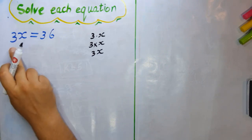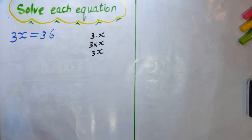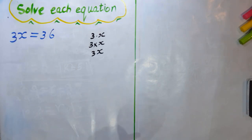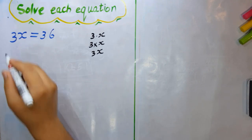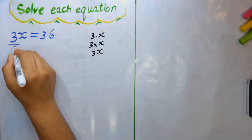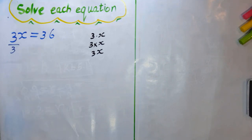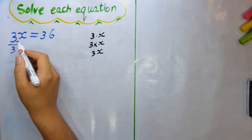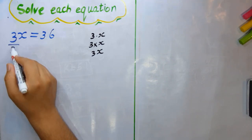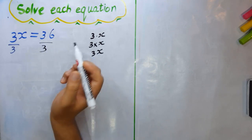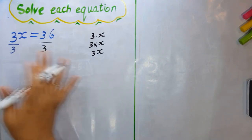Since 3 is multiplied by x, and the opposite of multiply is divide, we divide both sides by 3. If we divide the left side by 3, we must also divide the right side by 3 to keep it balanced.